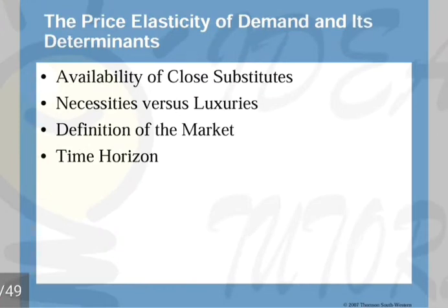The price elasticity and its determinants: there are various determinants that affect the elasticity of a commodity. Four major ones are: first, availability of close substitutes — whether there are alternatives to the good being studied; second, necessities versus luxuries — whether the good is a luxury or a necessity; third, definition of the market — what type of market we are studying; and fourth, time horizon — short run versus long run.